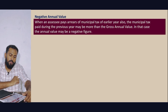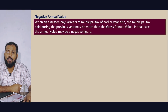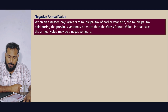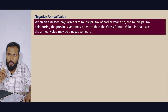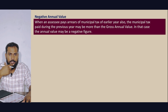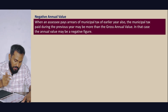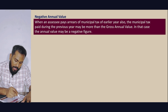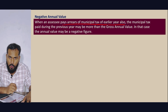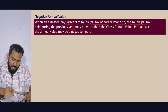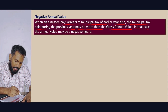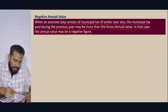There can be a negative annual value. When a landlord pays arrears of Municipal Tax from an earlier year, the Municipal Tax paid during the previous year may be more than the Gross Annual Value. In that case, the Net Annual Value becomes a negative figure.